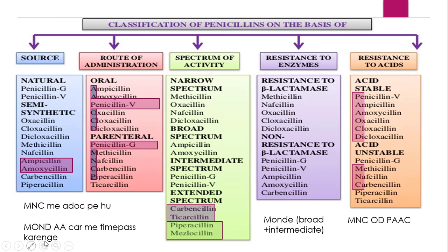The remaining is the Monday class — narrow spectrum — which forms the resistant to enzyme class. Resistant to enzyme is same as the narrow spectrum class. The resistant class is narrow spectrum and non-resistant class is broad and intermediate spectrum. So Monday: M stands for Methicillin, O stands for Oxacillin, N stands for Nafcillin, D stands for Dicloxacillin, C stands for Cloxacillin — same penicillin in every class. So the resistant examples are Methicillin, Nafcillin, Oxacillin, Cloxacillin, Dicloxacillin.